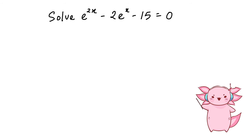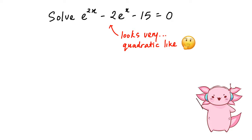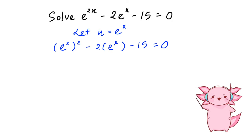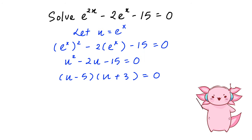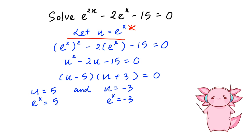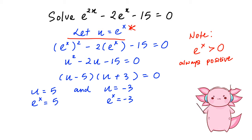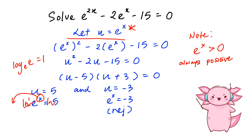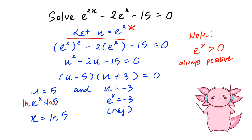The second type of question is the 'let u = something' kind. This equation almost looks like a quadratic, so we let u = eˣ and it becomes simple to solve. Factorizing gives u = 5 and u = −3. Since eˣ is always positive, we reject −3. To solve eˣ = 5, we take ln on both sides — ln(e) becomes 1 — and we get x = ln 5.